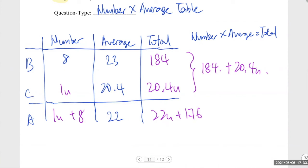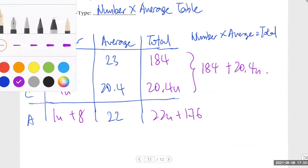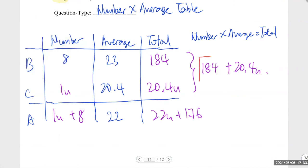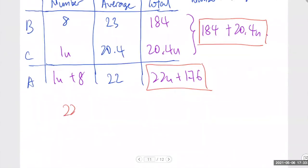So, Ashman and Lokeh, if you are able to follow and understand this table, you will realize something. You will realize that these two are the same. Which means that you should be able to form an equation that states 22U plus 176 equals to 184 plus 20.4U.